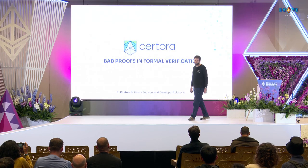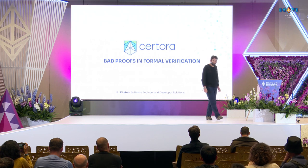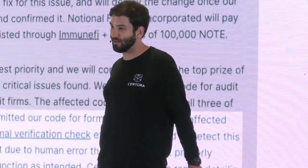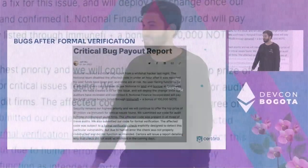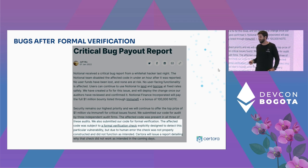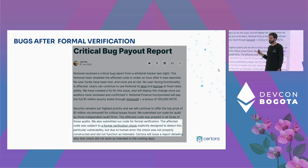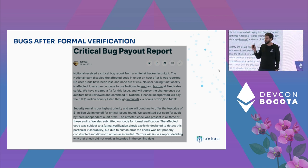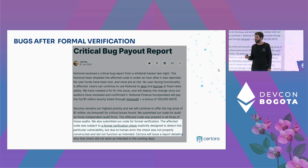Hello everyone, I am Uri from Sertora, and today we're going to talk about bad proofs in formal verification. Many times people think of formal verification as the holy grail or highest insurance against bugs. And yet sometimes we still see that even projects that have been formally verified still contain bugs. For example, this is a high profile case where we in Sertora have formally verified a specific thing about one of our customers and it still contained a bug in deployment.